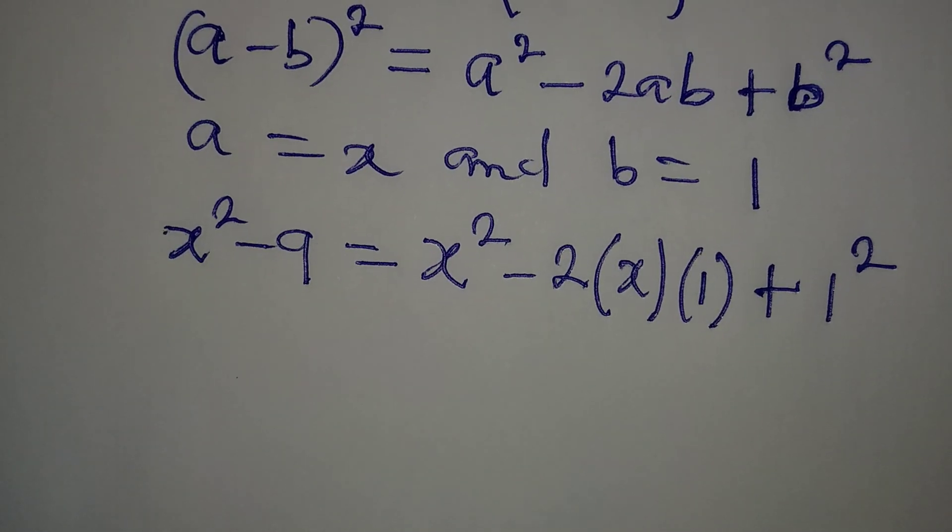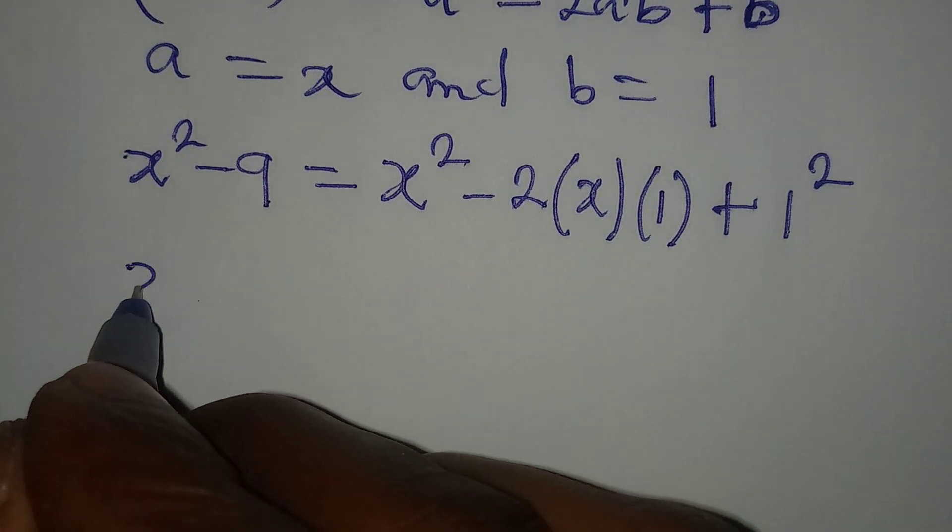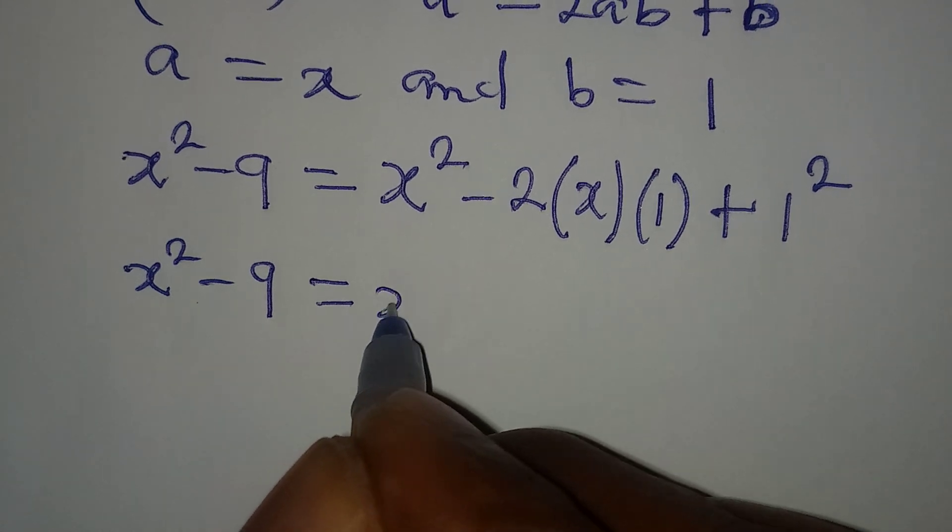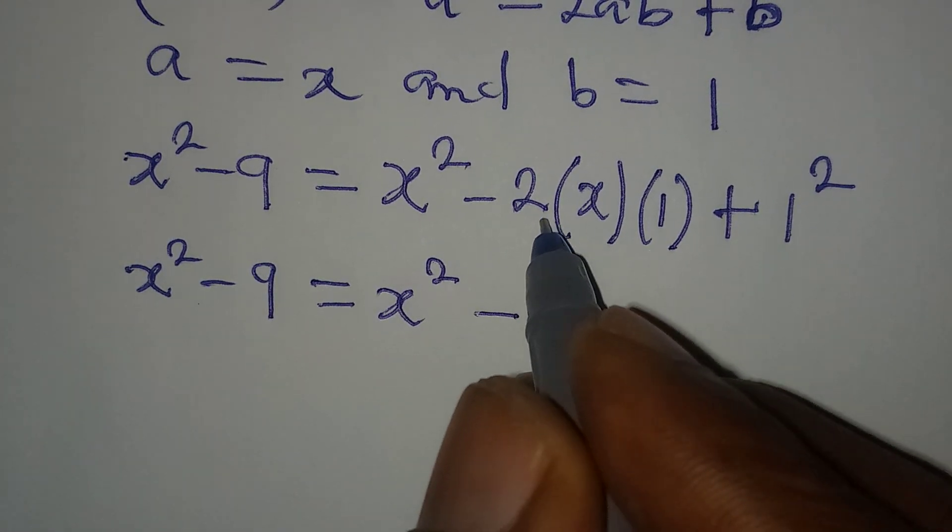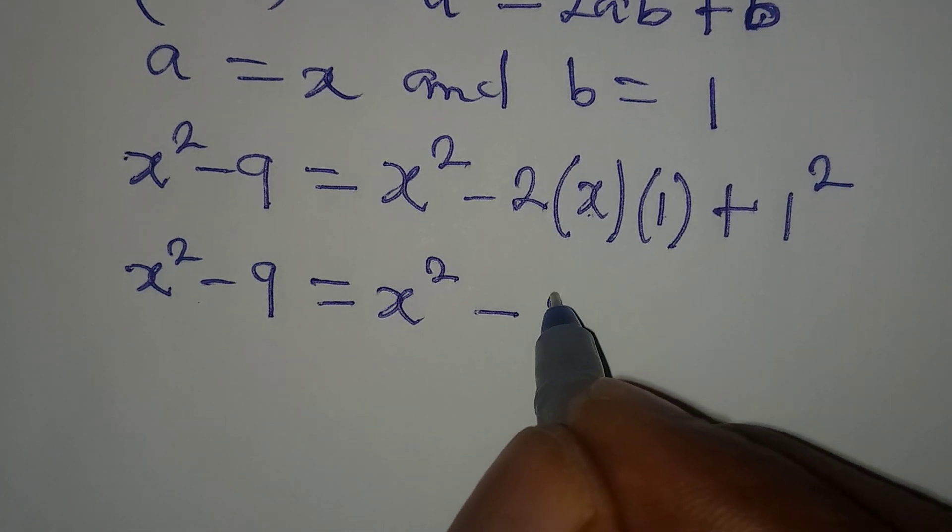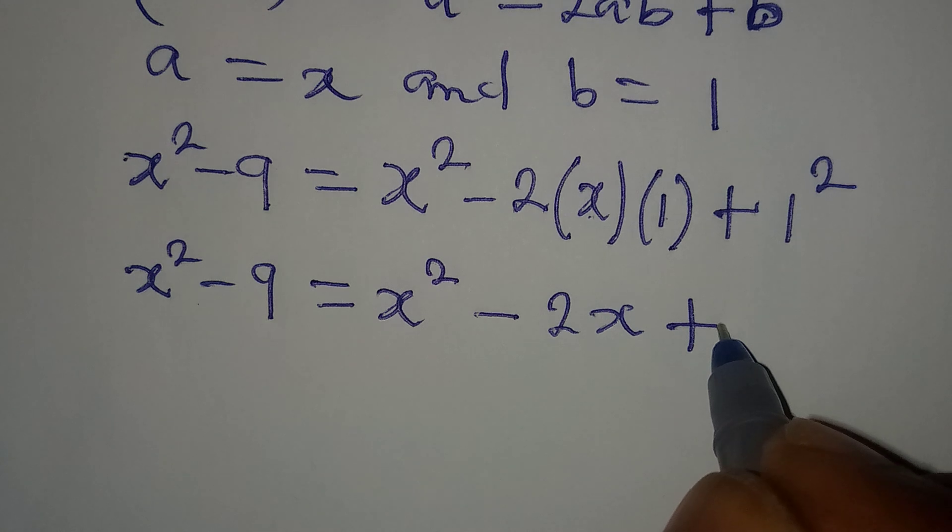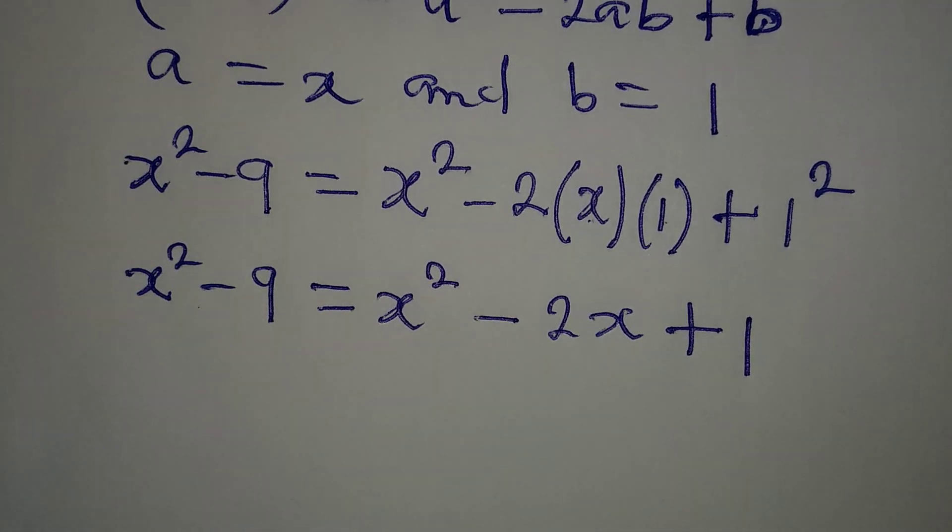Sorry, I wrote out of sight. This is what we have. So that from here, x squared minus 9 will be equal to x squared minus this times this times this will give 2x. Then plus 1 squared, which will give 1, right?